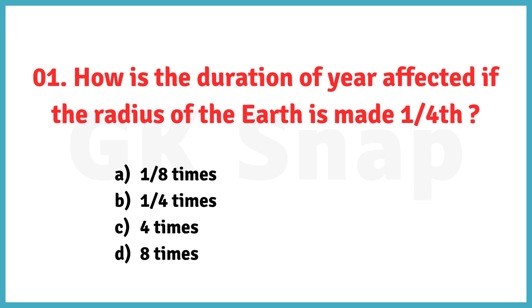How is the duration of year affected if the radius of the Earth is made one by fourth? The correct answer is option A: one by eight times.